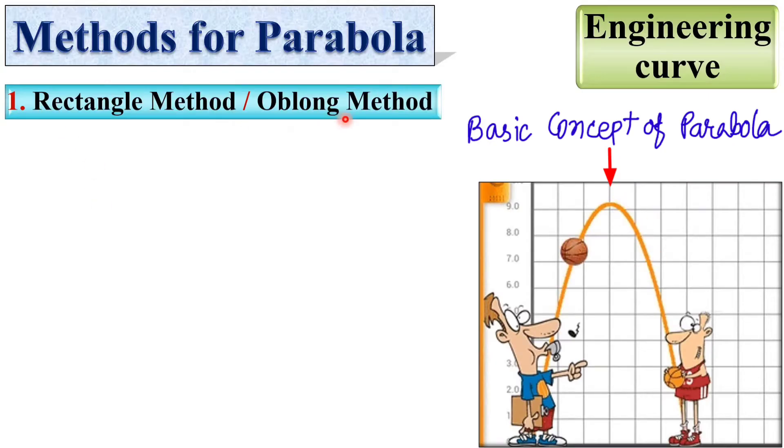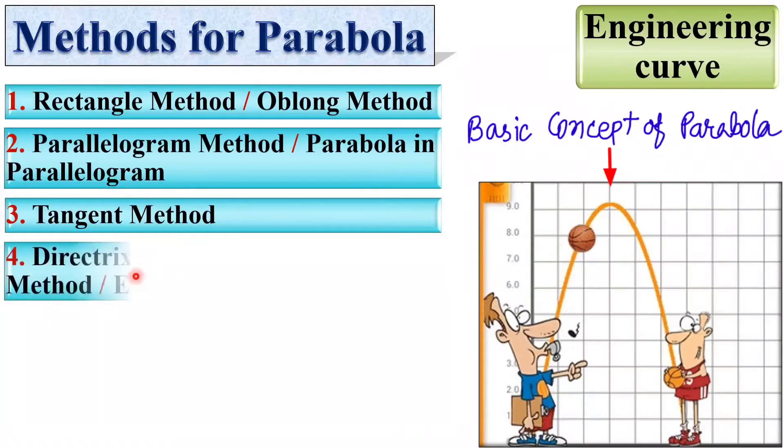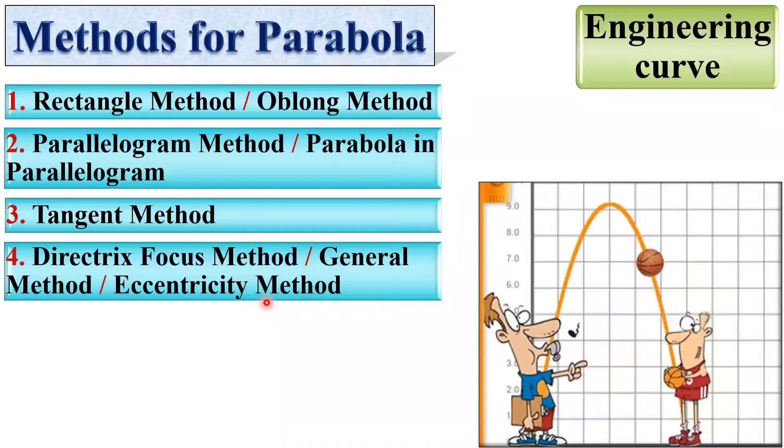Now there are different methods. First, rectangle method that is also known as the oblong method. Then second one is the parallelogram method, also known as parabola in parallelogram. Next, tangent method, and at last directrix focus method, also known as general method as well as eccentricity method.